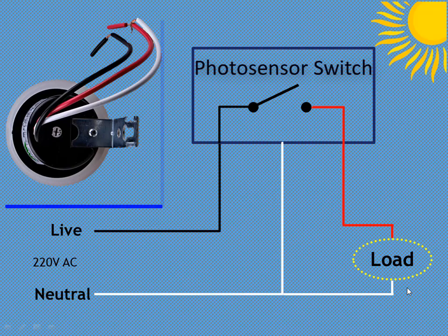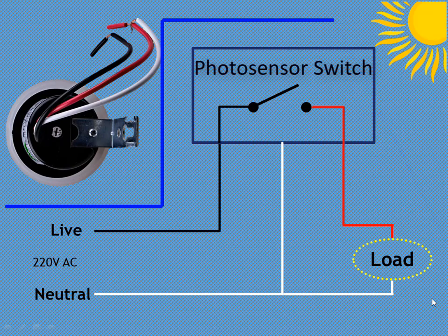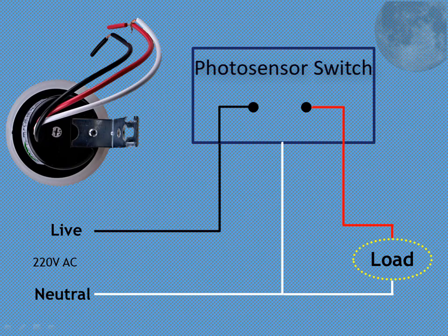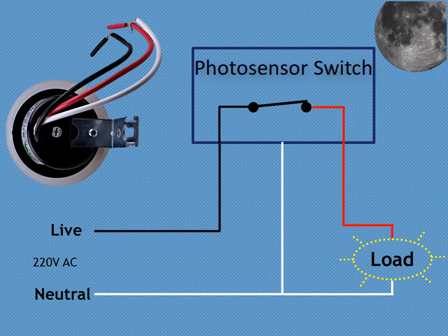Here is the schematic diagram of this photo sensor switch. As this output is open during sunny and closed during night, while we need closed output during day and open during night.